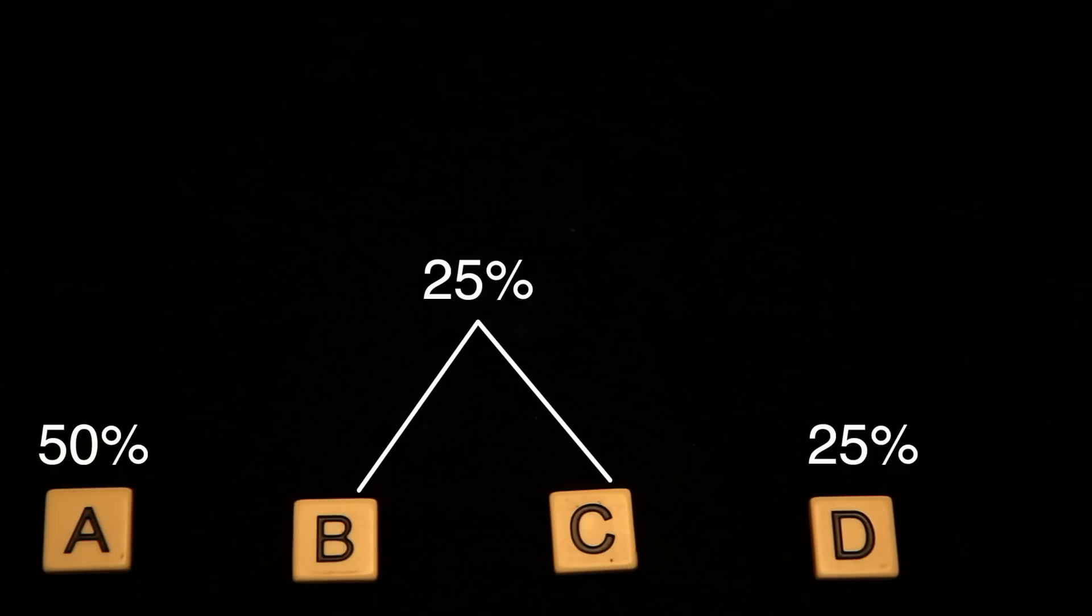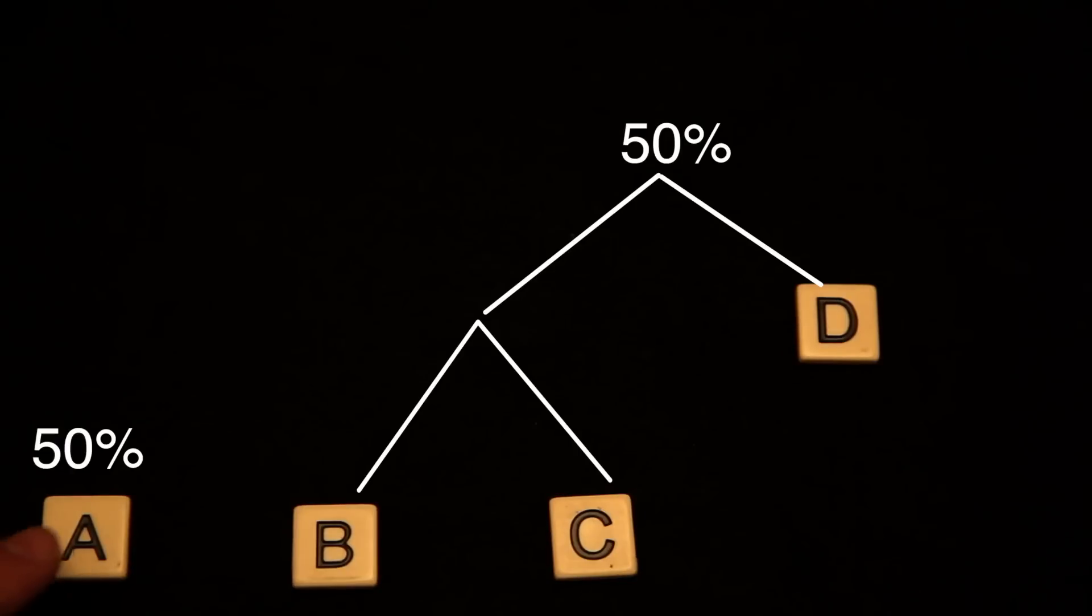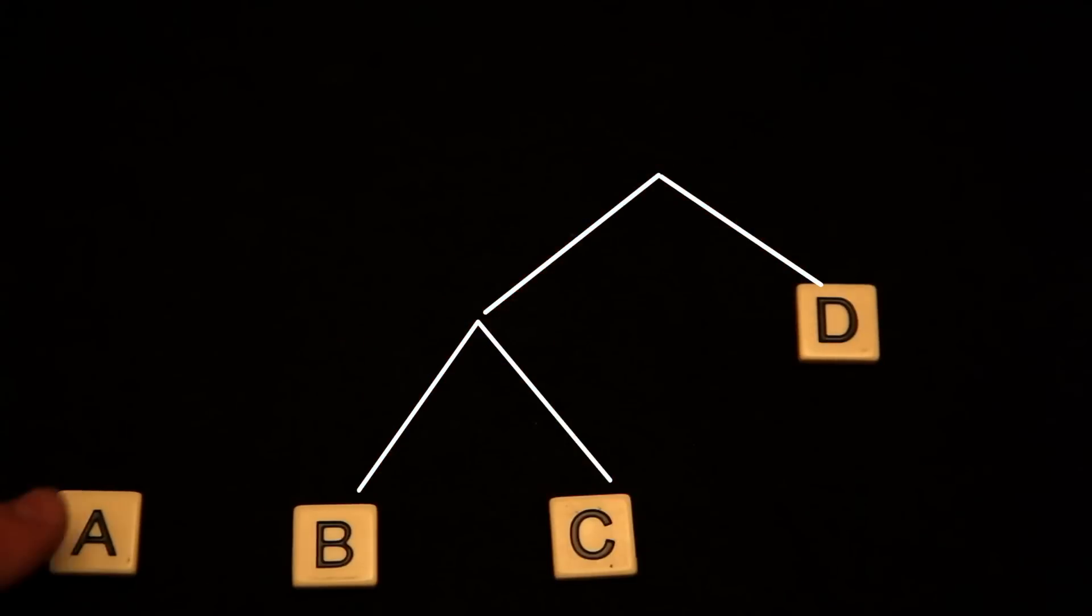Then we repeat with the next two least likely nodes and continue merging until you have a single node at the top.